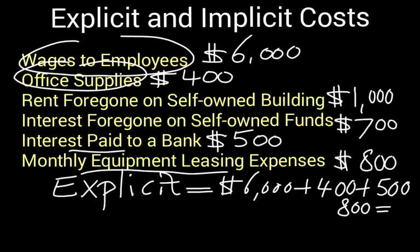Adding all the explicit costs together: $6,000 plus $400 plus $500 plus $800 gives us total explicit costs of $7,700.